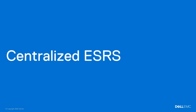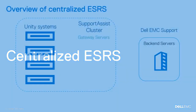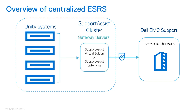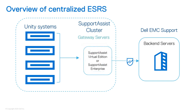Centralized ESRS provides centralized management of ESRS for multiple storage systems through a gateway server. With this option, you add your Unity system to the existing ESRS Virtual Edition gateway server. If a secondary ESRS Virtual Edition gateway server exists in your network, configuring your Unity system to connect to both gateway servers provides ESRS high availability. If the primary gateway goes down, ESRS will failover to the secondary gateway.